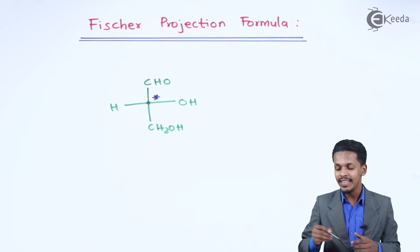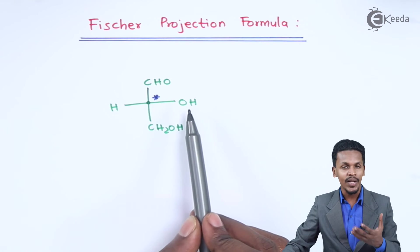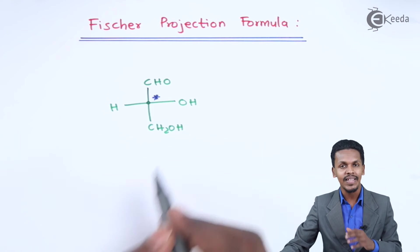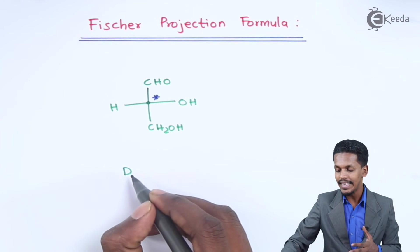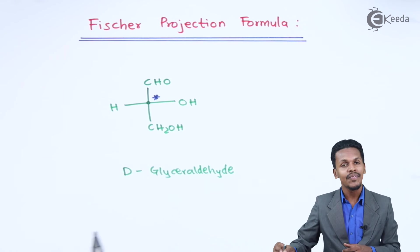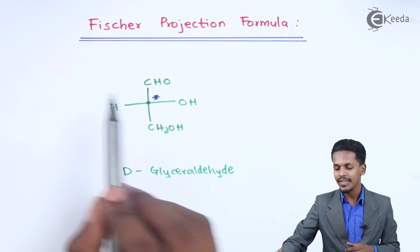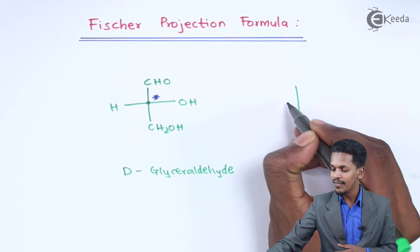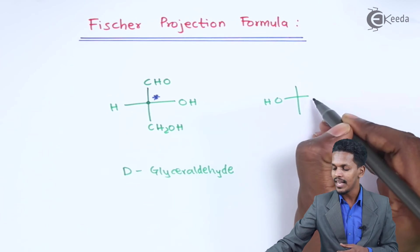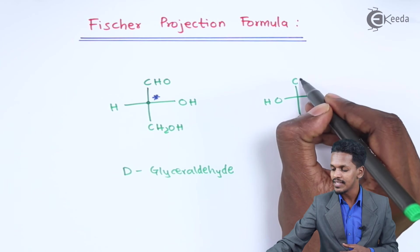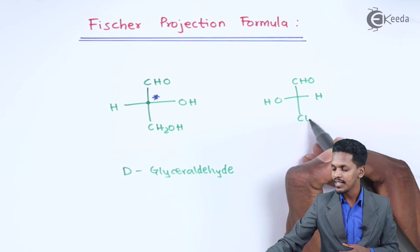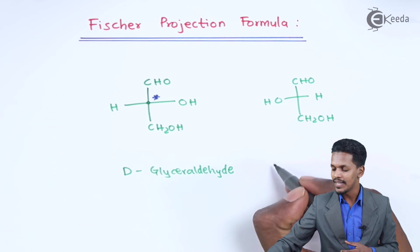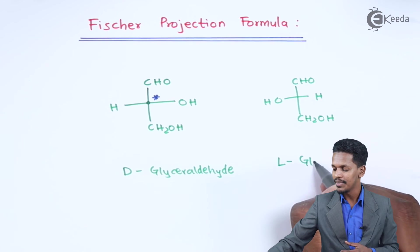This is the structural representation of glyceraldehyde. When OH is on the right-hand side, this kind of glyceraldehyde is known as D-glyceraldehyde. If we draw the Fischer projection with OH on the left and H on the right, CHO at the top, and CH₂OH at the bottom, this represents L-glyceraldehyde.